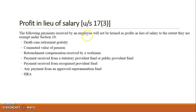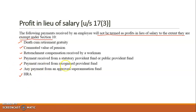Certain payments received by an employee will not be termed as profits in lieu of salary to the extent they are exempted under section 10. These include gratuity, pension, retrenchment compensation, and payments from statutory provident fund, PPF, recognized provident fund, approved superannuation fund, and house rent allowances. All these payments, to the extent not exempted, can be termed as profit in lieu of salary under section 17(3). Whatever amount is taxable, it should be taxed under the head income from salaries.